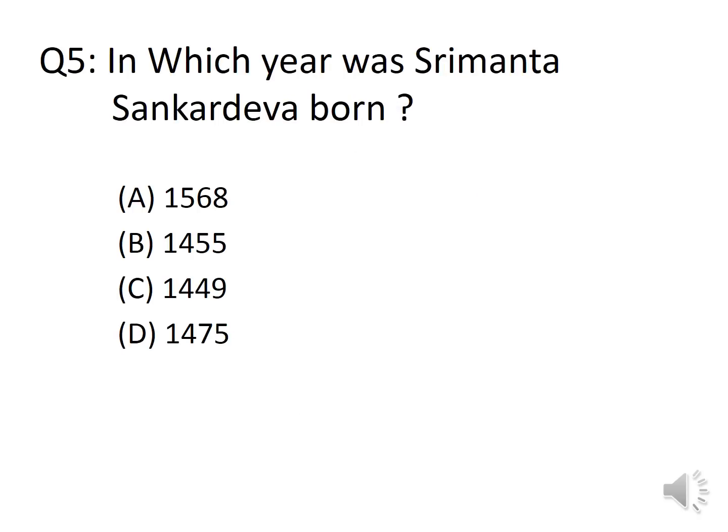Question 5: In which year was Srimanta Sankardeva born? Options: A. 1568, B. 1455, C. 1449, D. 1475. The answer is Option C, 1449. You must also know the death year of Srimanta Sankardeva, which is 1568. Srimanta Sankardeva had an enormous contribution to Assamese culture, especially in making the Satra and Borgit. He was also considered a poet; his famous book is Kirtan Ghosa.